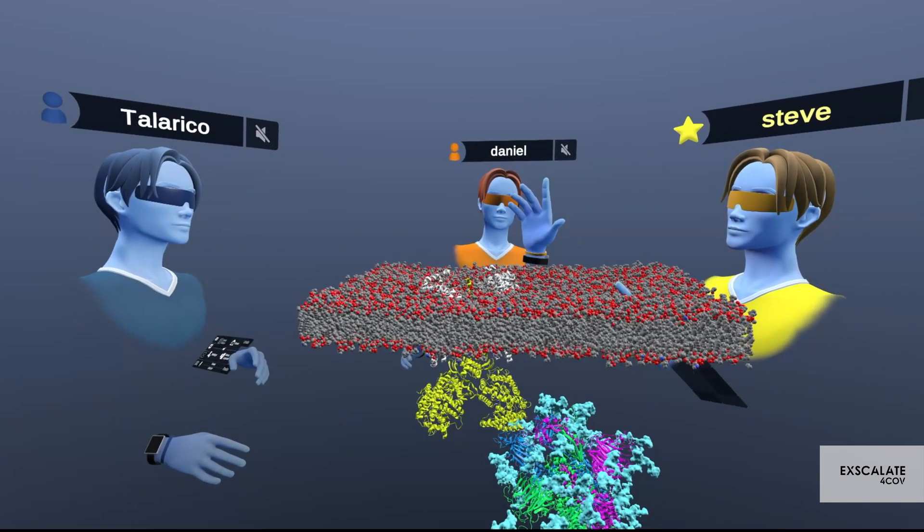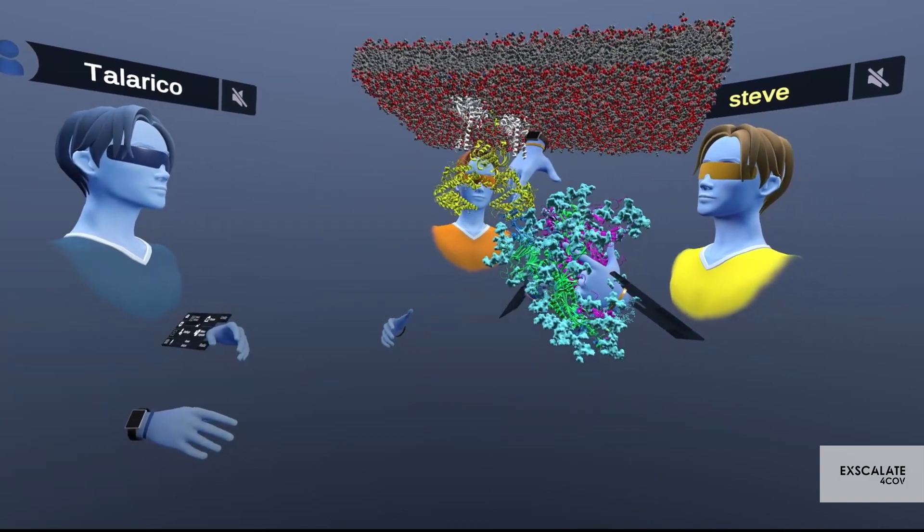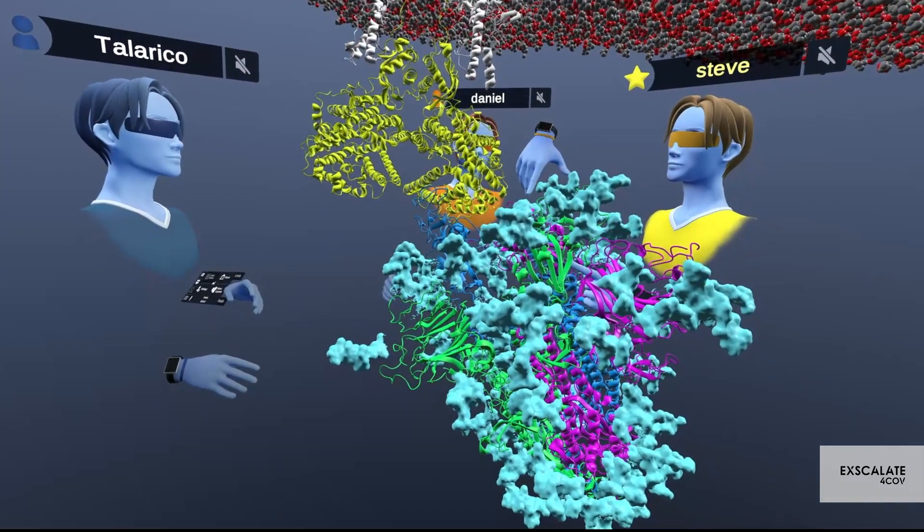So this would pretty much be inside your cell, this is outside of your cell, and this is how the coronavirus gains entry.